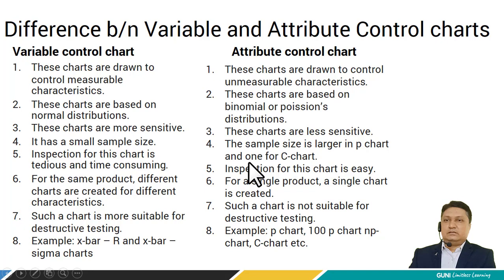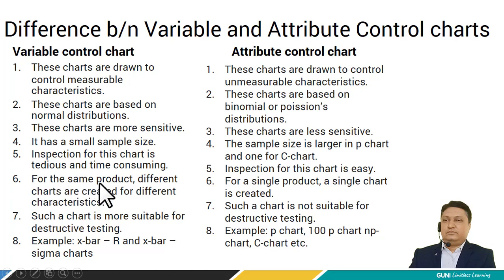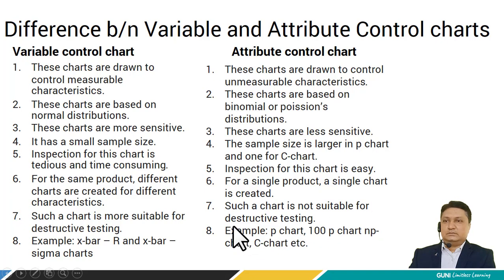Variable control charts have a small sample size, while the size of samples are larger for p chart, and for Poisson's chart the sample size is 1. Inspection for variable control charts is tedious and time-consuming, while inspection for attribute charts is very easy. For variable control charts, different charts are created for different characteristics of the same product, while in attribute control charts a single chart is created for a single product. Variable control charts are not suitable for destructive testing, while attribute control charts are suitable for destructive testing. Examples of variable control charts are x-bar and R chart and x-bar sigma charts, while examples of attribute control charts are p chart, 100p chart, np chart, c chart, etc.